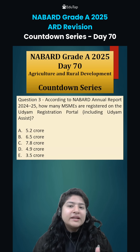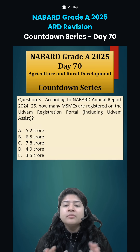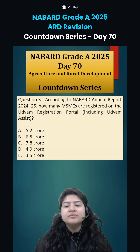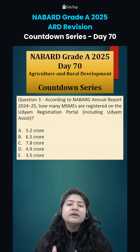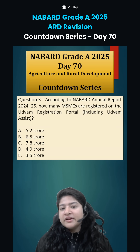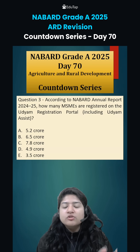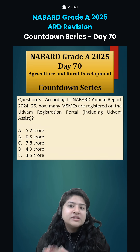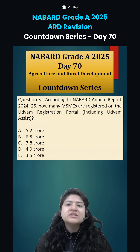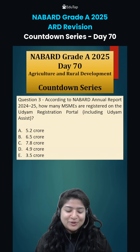This type of question may not come directly asking 'as per the annual report,' but it can come as: how many registered MSMEs are there? So as per the NABARD annual report, you need to know the number including the Udyam Assist. Comment down the answers and we will discuss them in the next class. Thank you.